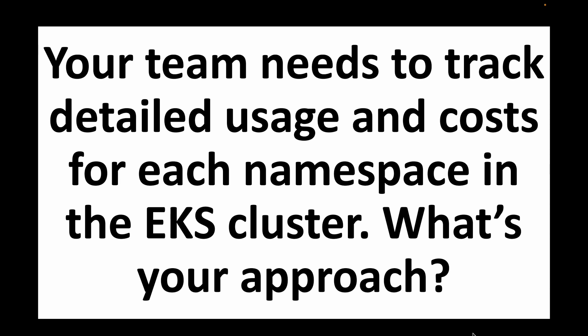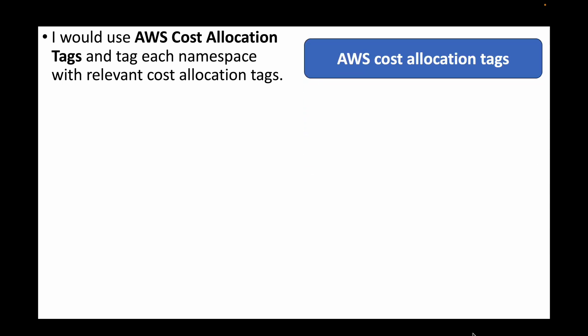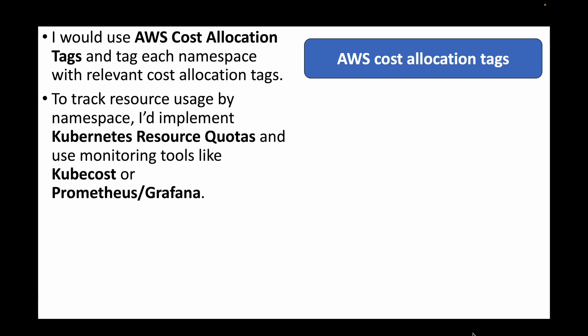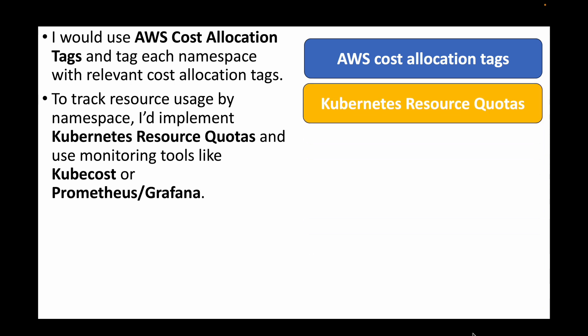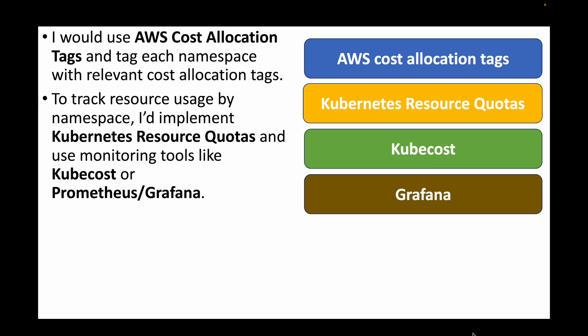The next question is: your team needs to track detailed usage and costs for each namespace in the EKS cluster. What's your approach? We can make use of AWS cost allocation tags, setting a tag for each namespace with the relevant cost allocation information. To track resource usage by namespace, we can use Kubernetes resource quotas and monitoring tools like KubeCost or Prometheus and Grafana.